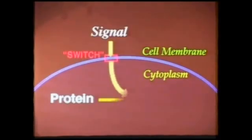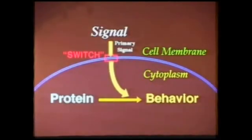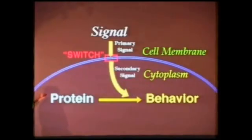When a signal comes to the membrane, it hits the membrane. There's a switch at the membrane which will interpret the signal and then send a secondary signal to generate the behavior. The switch has two parts: one part reads the primary environmental signal, and the other part sends the second signal, or second message.